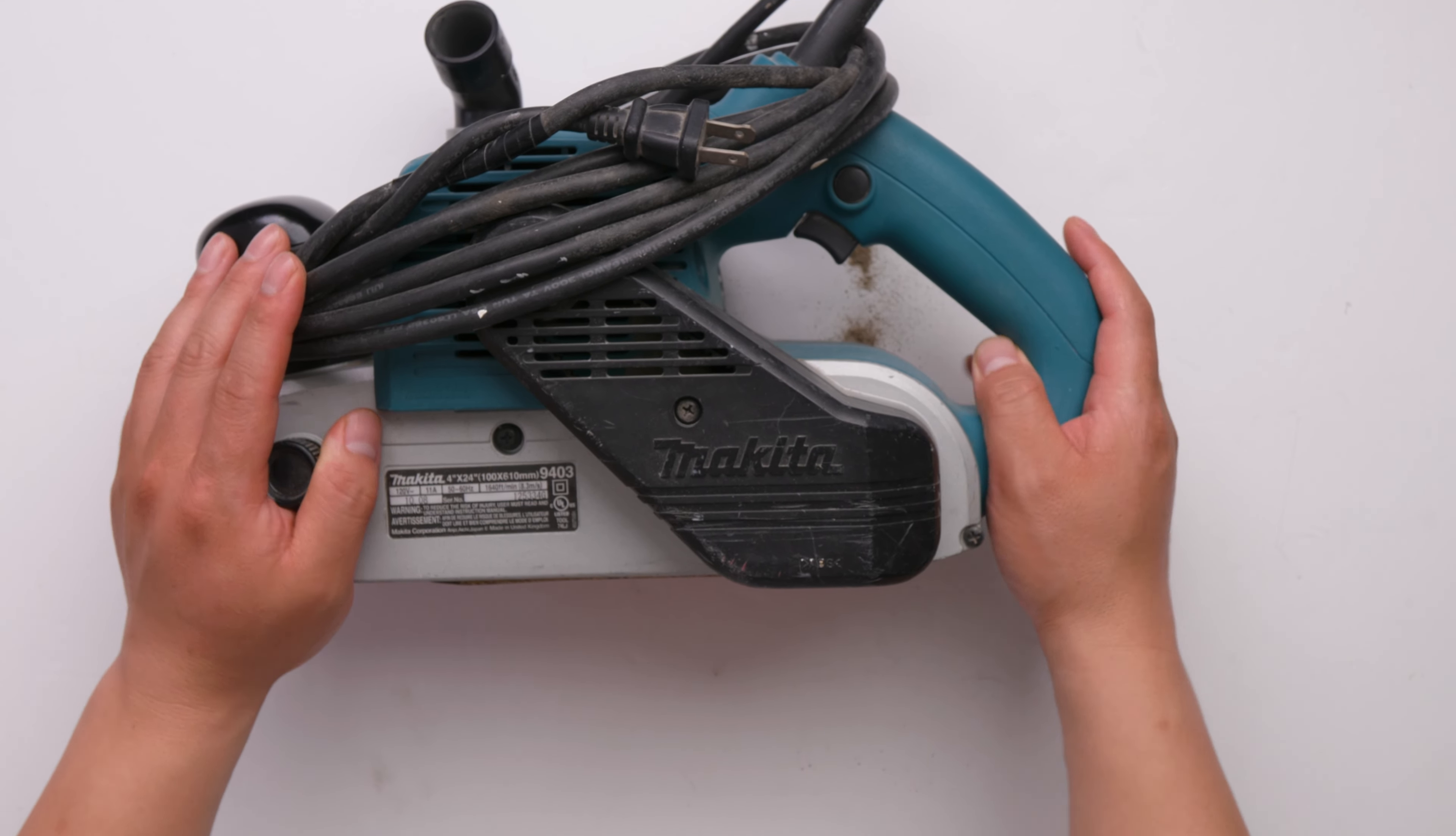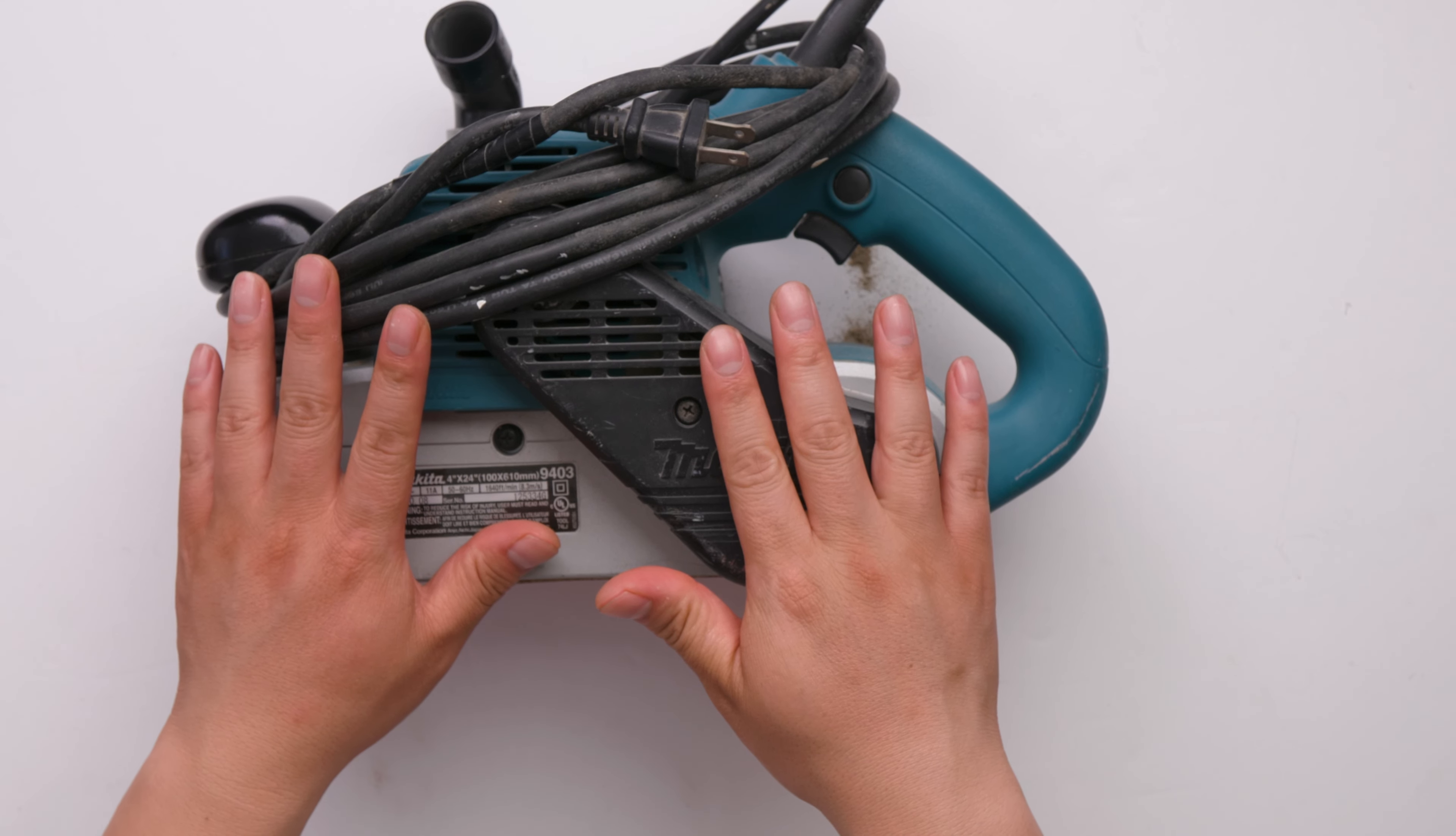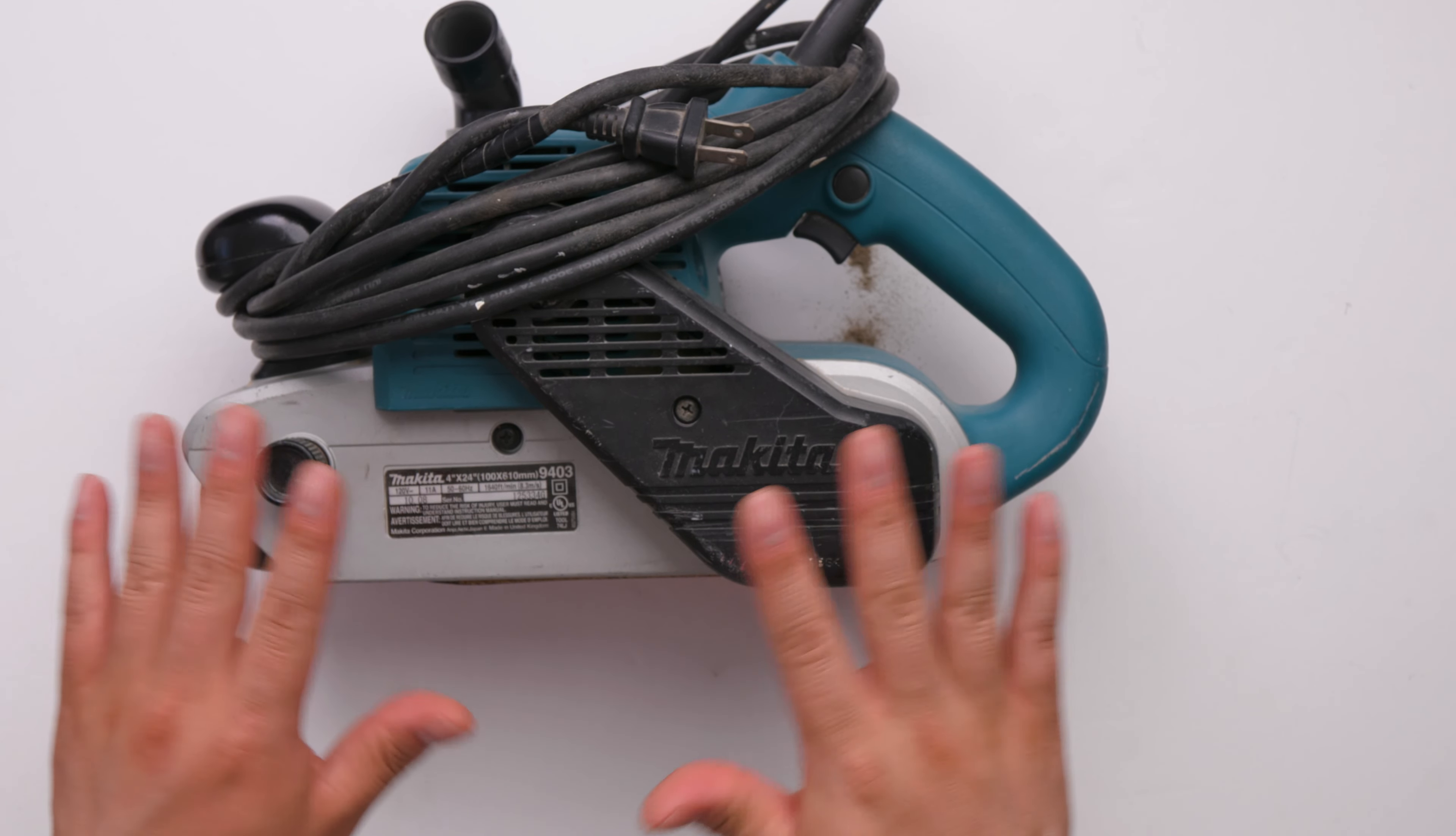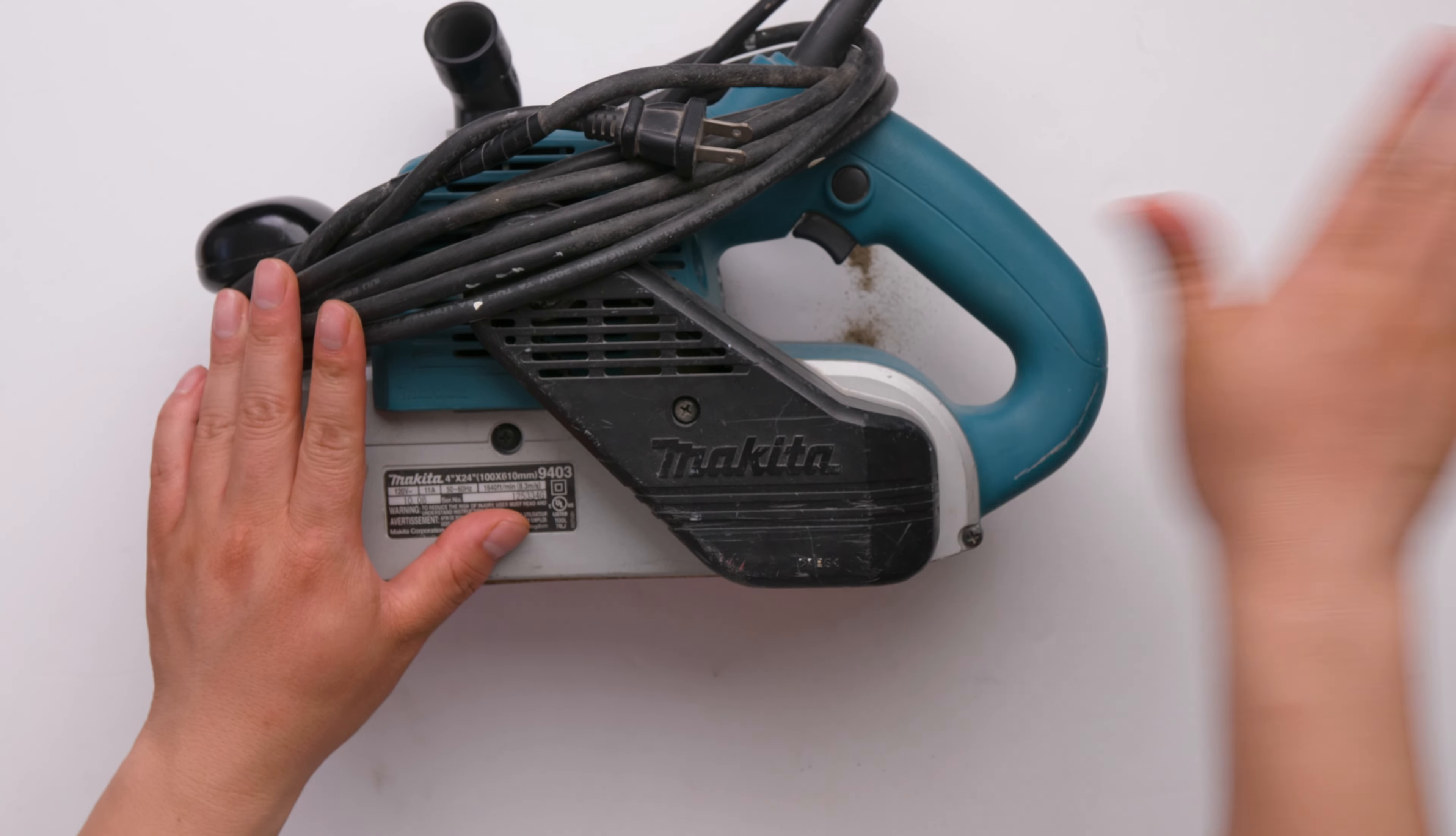Why do you need a belt sander? You want to remove a lot of material on flat surfaces. For example, if you're sanding your subfloor to make it super flat, or sanding a bigger board, you'll use this. It's not good for small area sanding or different shapes.